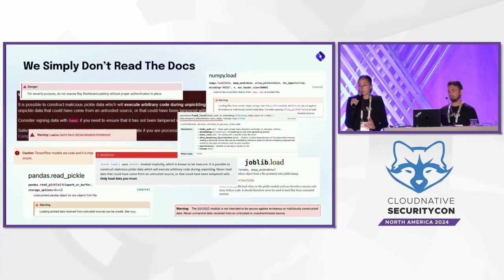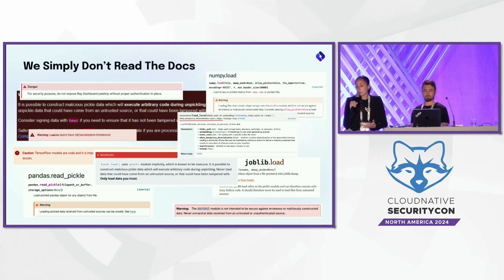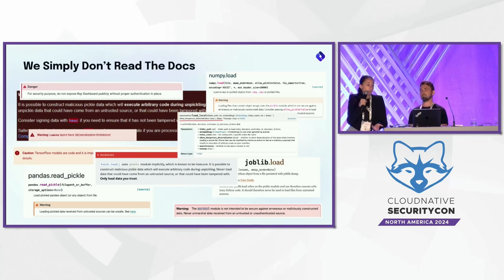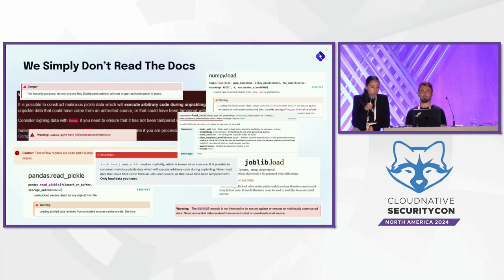Those warnings are there for a reason, but we usually just ignore them. We can't expect developers to read all the documentation of libraries before starting to use them — we just can't expect them to fix CVEs that aren't assigned. So those warnings are simply not enough.